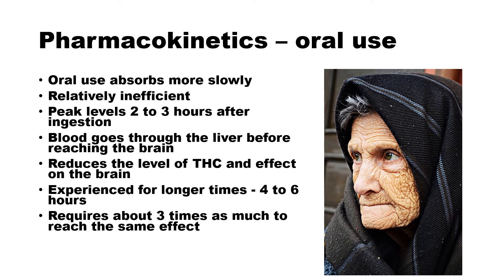The pharmacokinetics of oral use is different, and oral use is the most common route for medical benefits. Oral use absorbs much more slowly and is relatively inefficient. Peak levels occur 2 to 3 hours after ingestion. The blood goes through the liver before reaching the brain, which reduces the level of THC and its effect. The experience lasts longer — 4 to 6 hours — and it requires about 3 times as much to reach the same effect in the bloodstream.